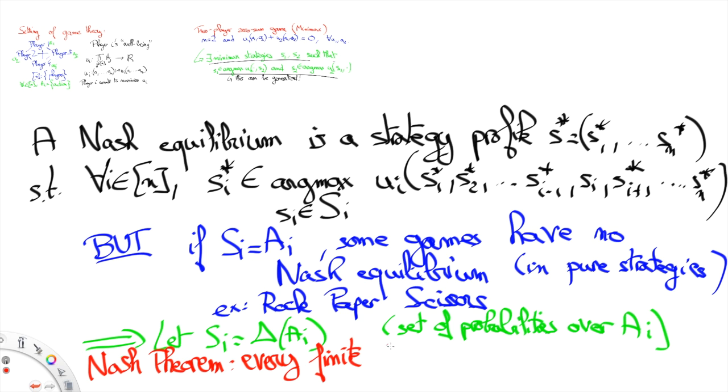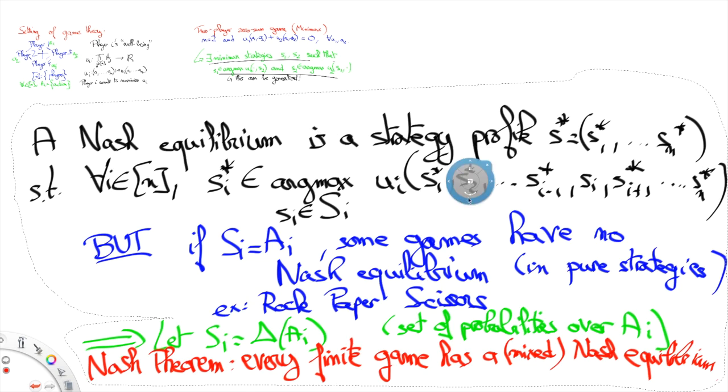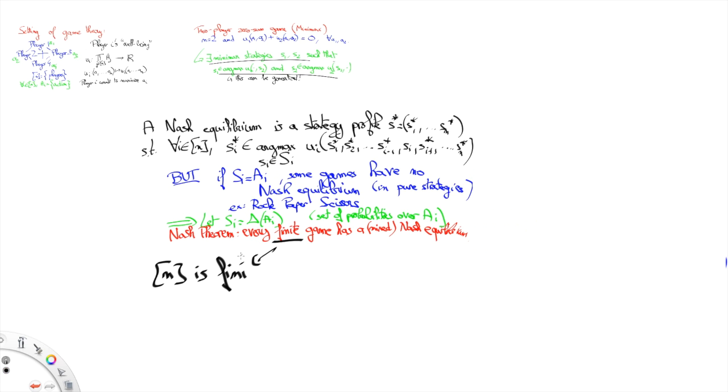This led him to the Nash theorem: any finite game has a Nash equilibrium in mixed strategies. By finite here, we mean that the set of players is finite, and as well that the set of actions available for each player is finite too.